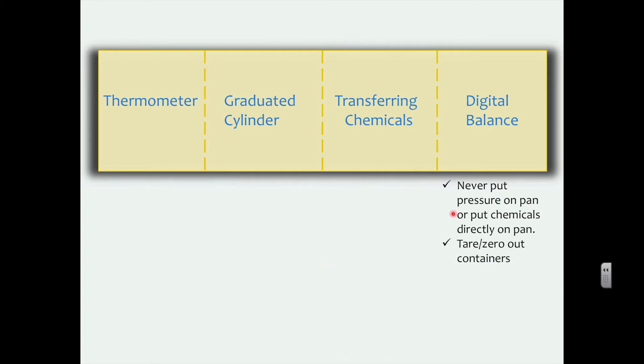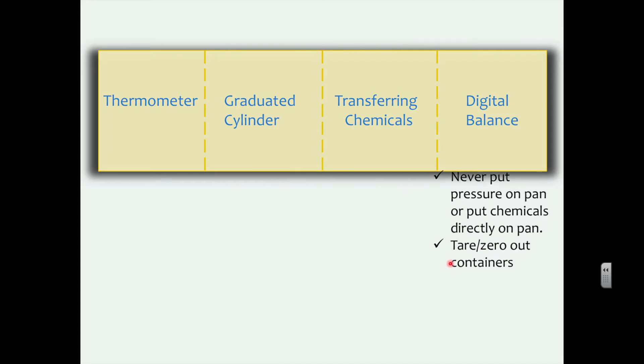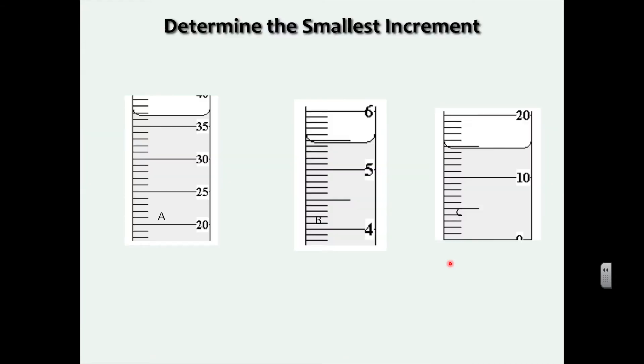So for a digital balance, please don't ever put your pressure on the pan, directly on the pan, and don't put any chemicals on it either. That's kind of gross, and you could ruin it. And some of them are expensive. And also please tare or zero out the containers, so you don't measure the mass of the container. So that takes a little bit of practice when we start working on it.